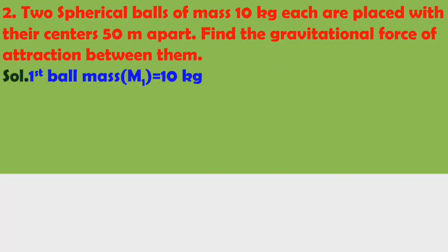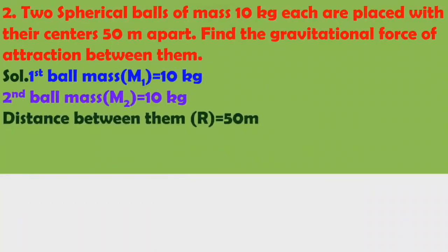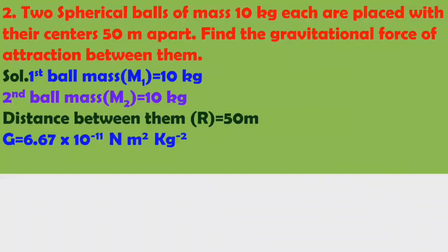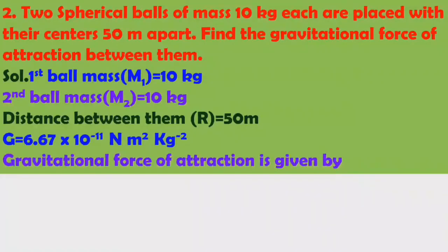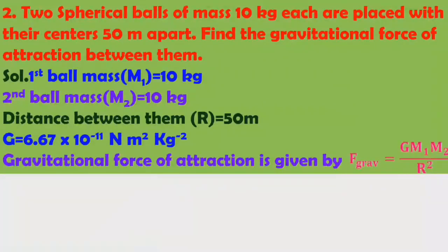We will see the solution. First ball mass M1 is 10 kilograms, second ball mass M2 is also 10 kilograms. Distance R is 50 meters. G value is 6.67 into 10 power minus 11 Newton meter square per kilogram square. Gravitational force of attraction is given by F gravitational equals G M1 M2 by R square, where M1 and M2 are the masses of the spherical balls.